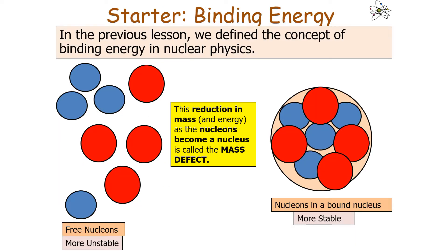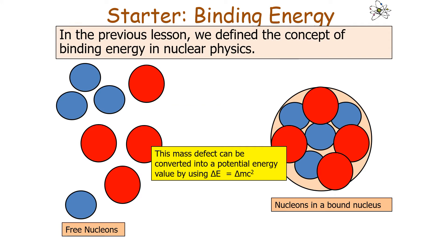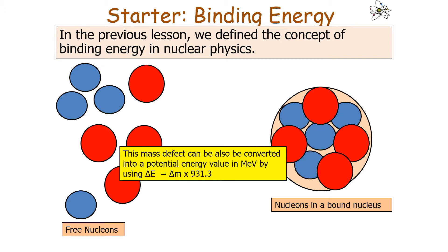In the previous lesson we defined the concept of binding energy in nuclear physics. The reduction in mass as nucleons turn into a nucleus is called the mass defect. This mass defect can be converted into a potential energy value using delta E equals delta mc squared, or in MeV using delta E equals delta m in u times 931.3.